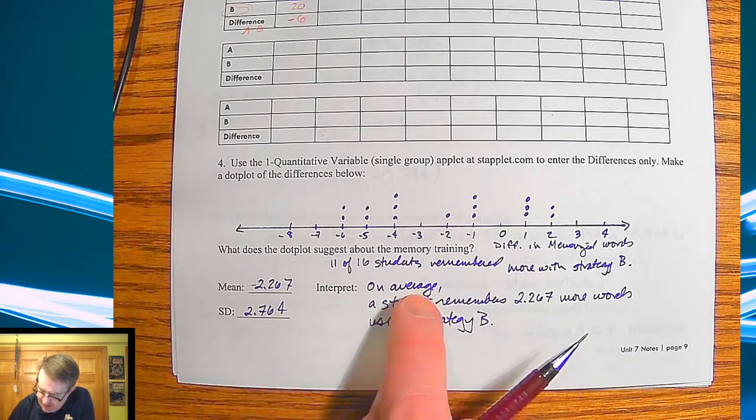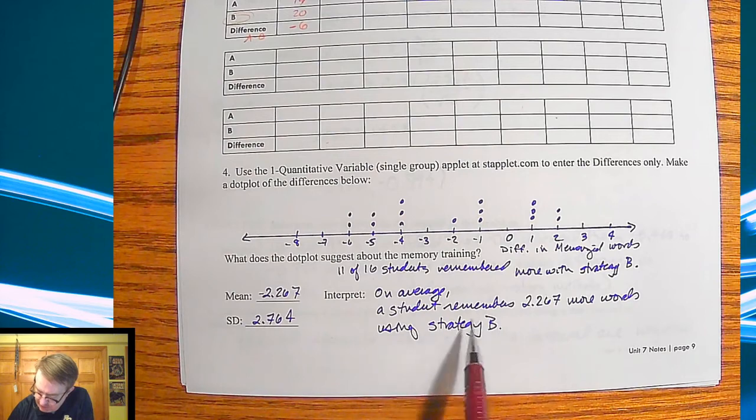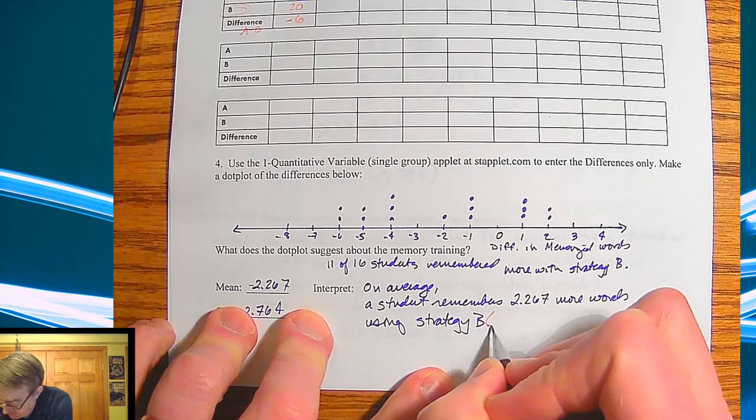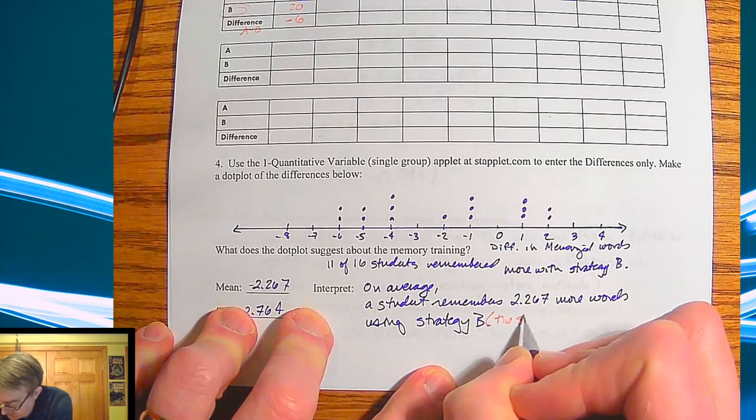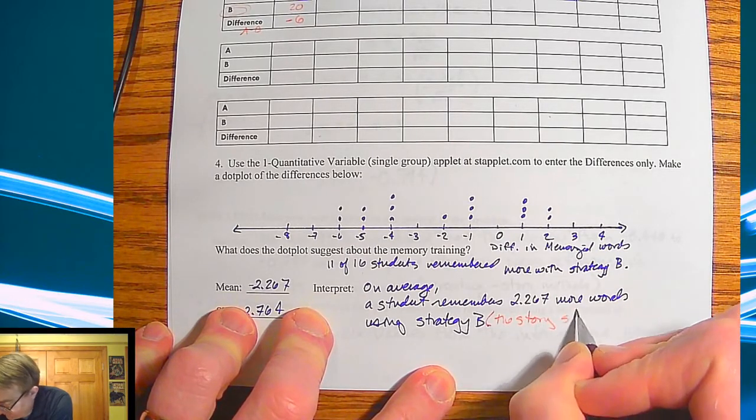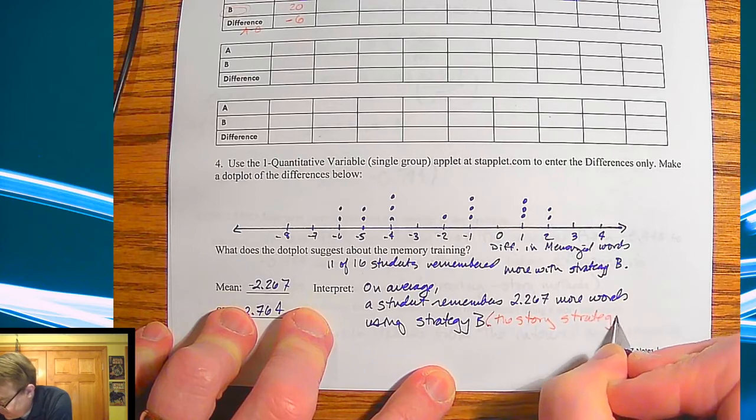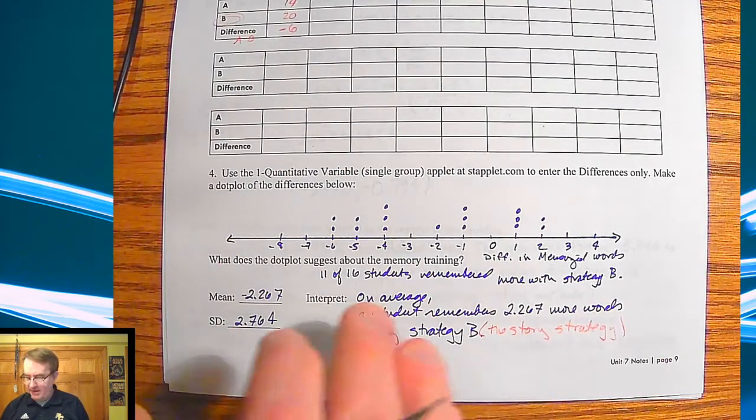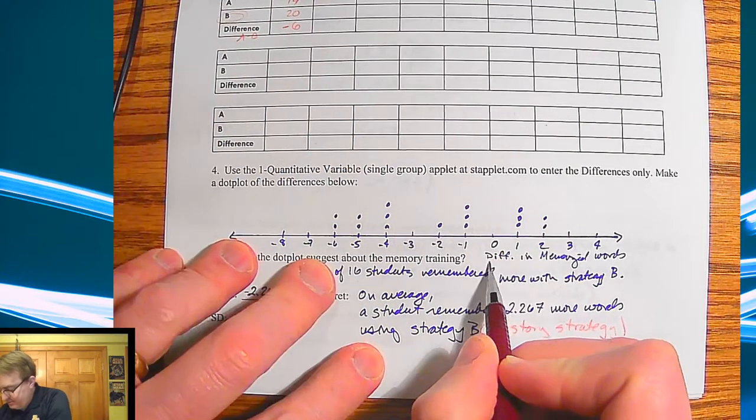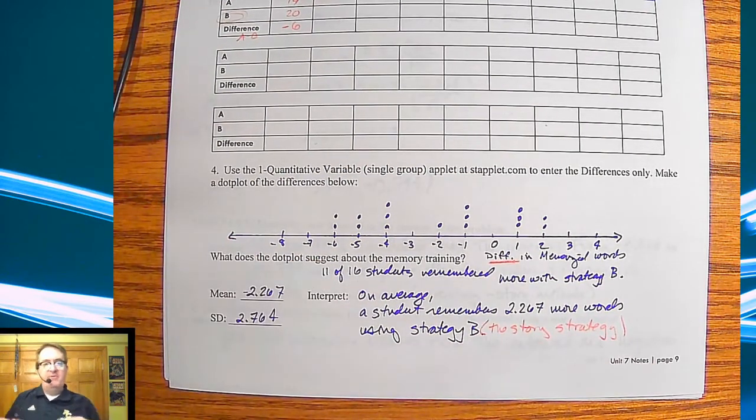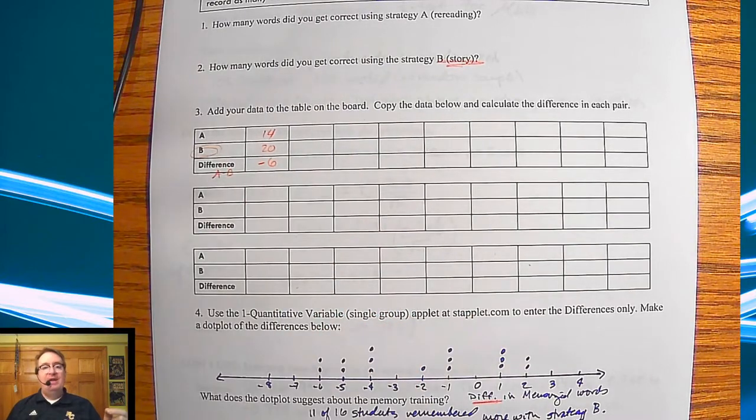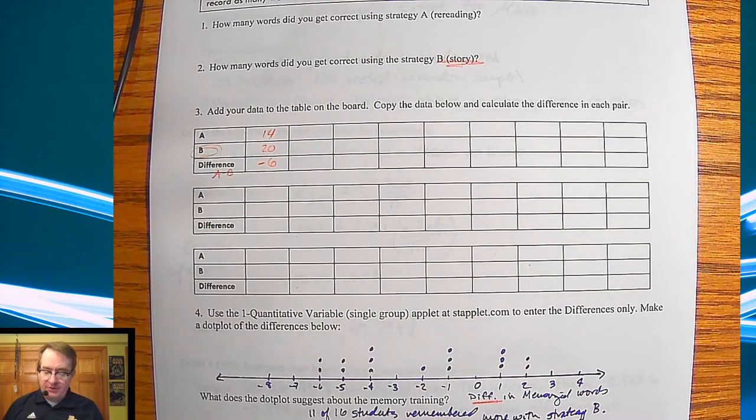In terms of the interpretation here, on average, a student remembers 2.267 more words using strategy B, the story strategy. Okay. So again, data collection dot plot. And we're doing the differences here. So yesterday, we ended up finding the averages and then taking the difference of those. Here, since we're talking about one person doing both strategies, we're finding the mean of all the differences.